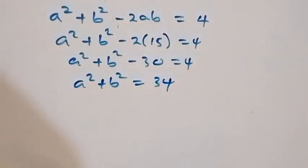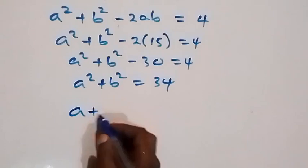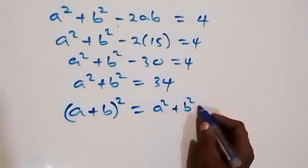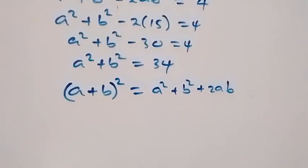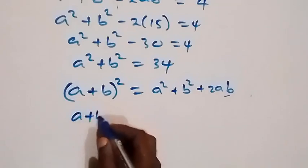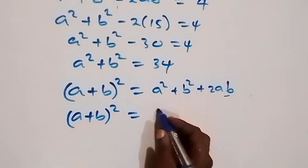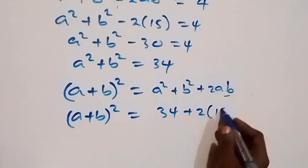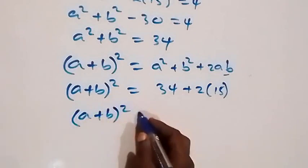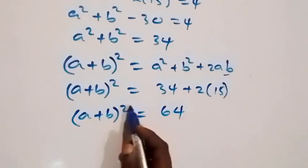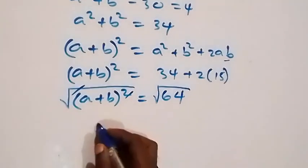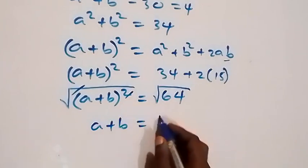From (A plus B) squared, the expansion is A squared plus B squared plus 2AB. Substituting A squared plus B squared equals 34 and AB equals 15, we get (A plus B) squared equals 34 plus 2 times 15, which equals 64. Taking the square roots on both sides, A plus B equals plus or minus 8.